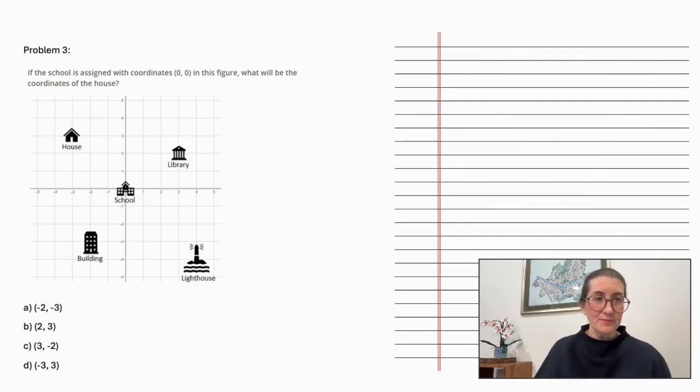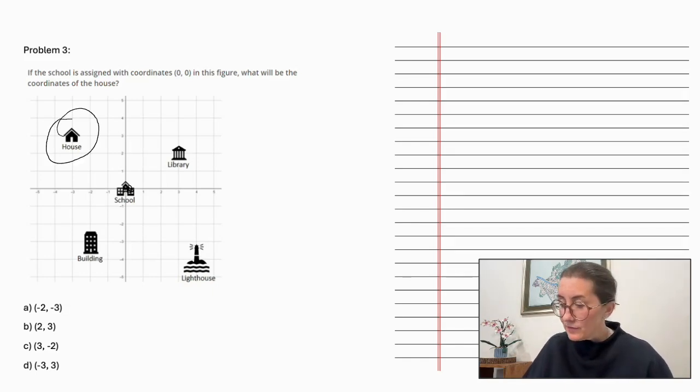Problem number 3. If the school is assigned with coordinates (0,0) in this figure, what will be the coordinates of the house? So the center is (0,0) and our house is over here.